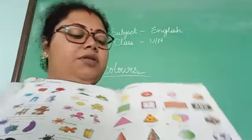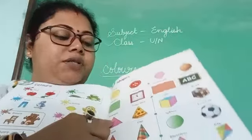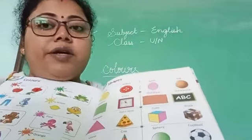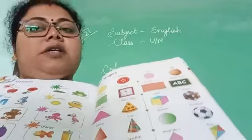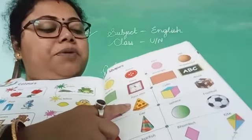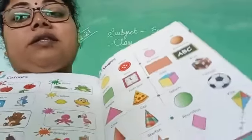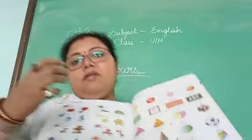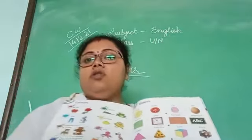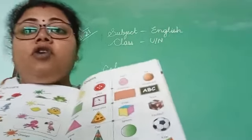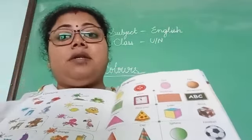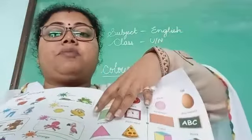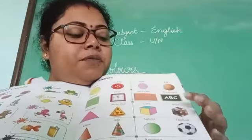Next, this one is a triangle. You know triangle. Triangle example is given: pizza slice. You have seen the pizza slice — you have eaten also. That is of what shape? Pizza slice is of the shape of triangle.